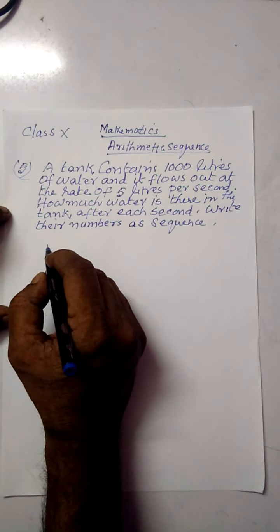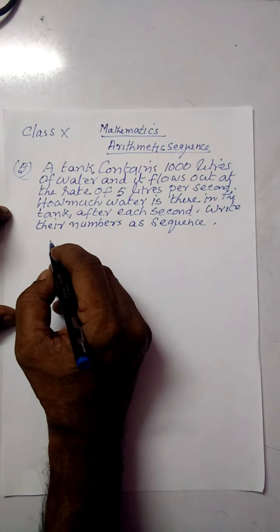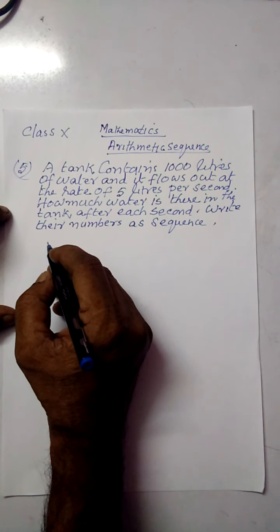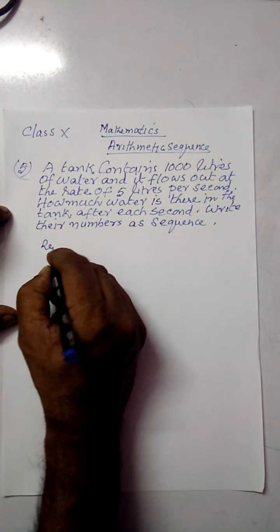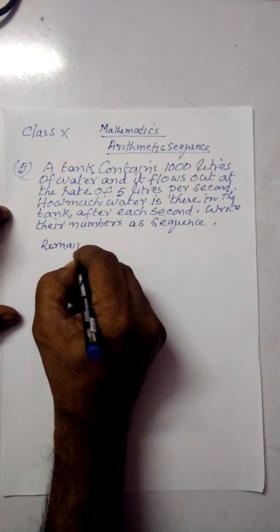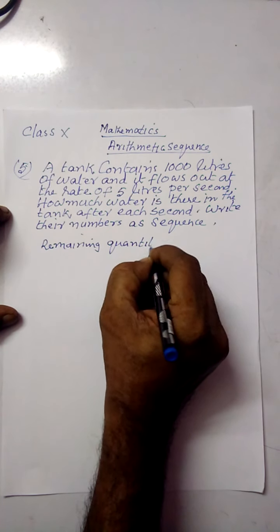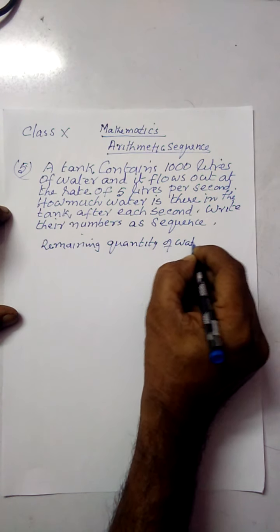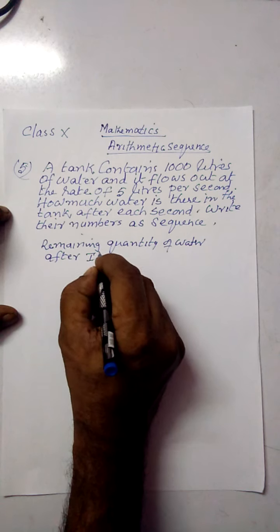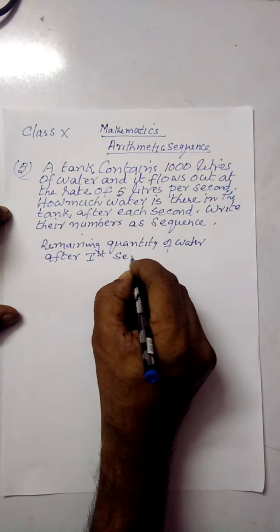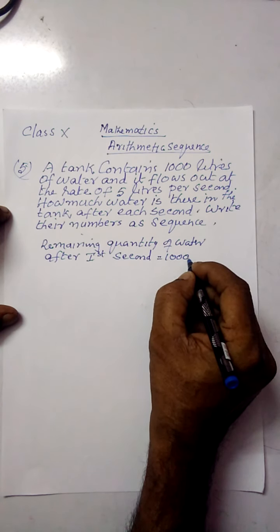Then, the remaining quantity of water after the first second: in the first second, there is 1000 liters of water, and five liters of water flows out. So the remaining quantity of water after the first second is 995 liters.